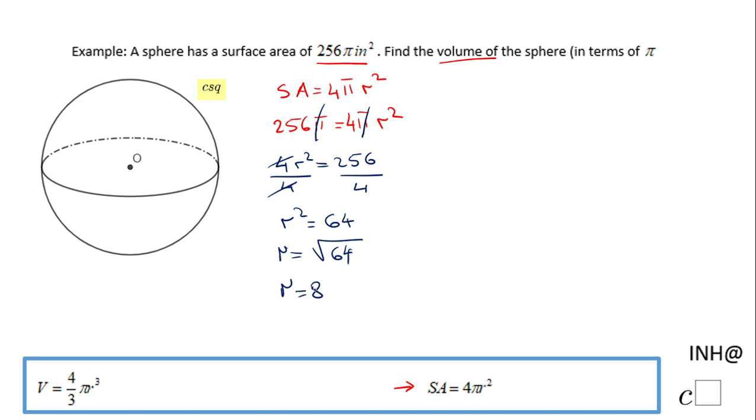Now we can go and find the volume of this sphere using this formula you see down here. The volume is 4 over 3 πr³, so we're going to replace the radius with 8.